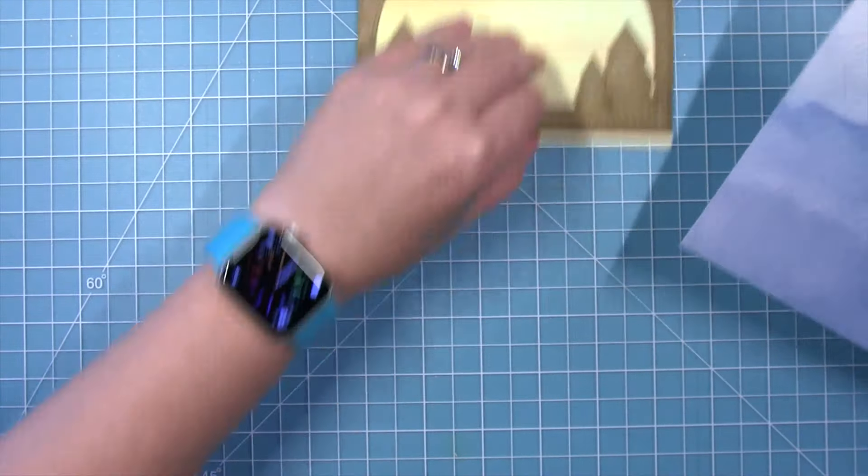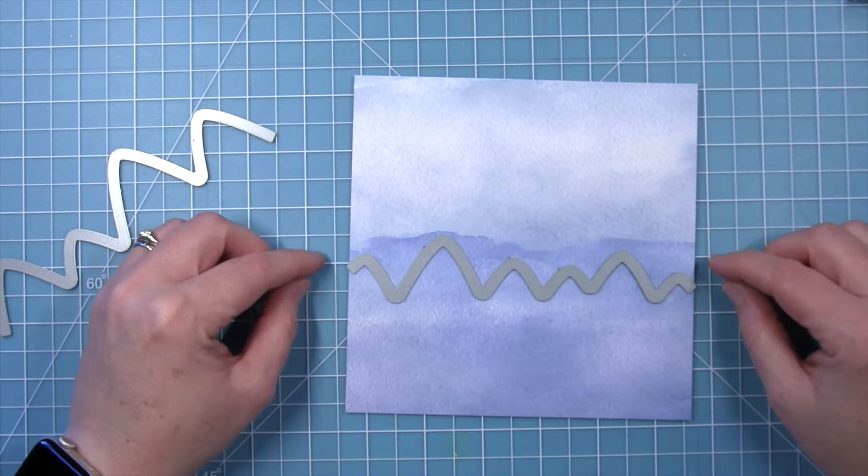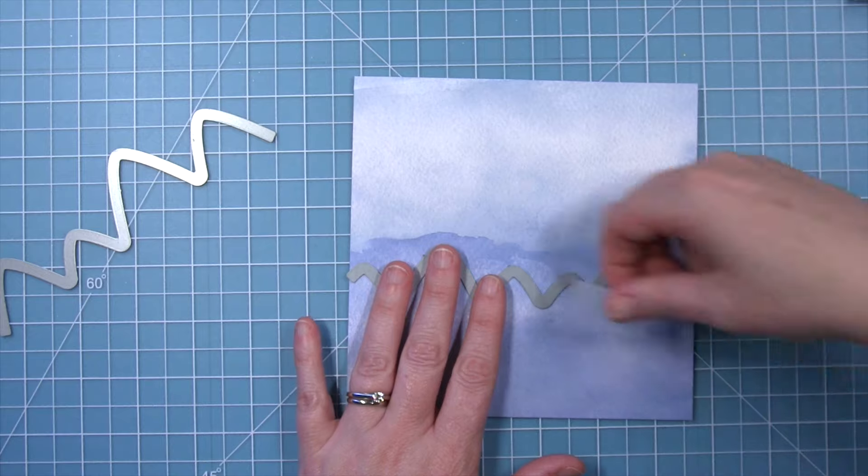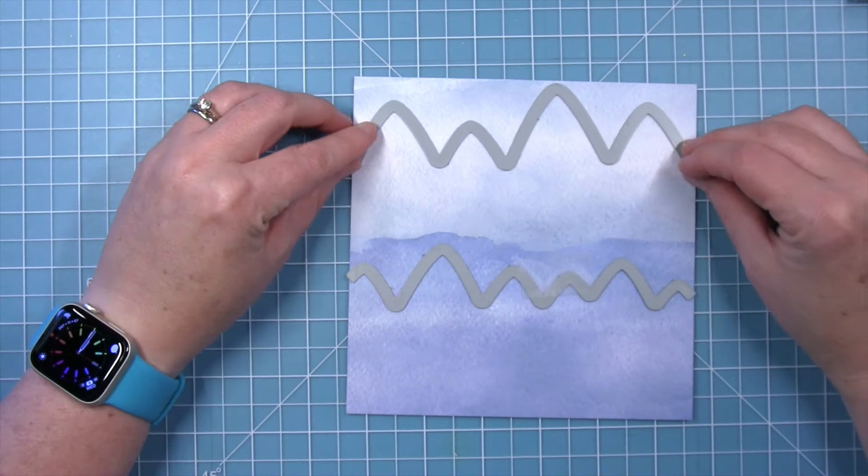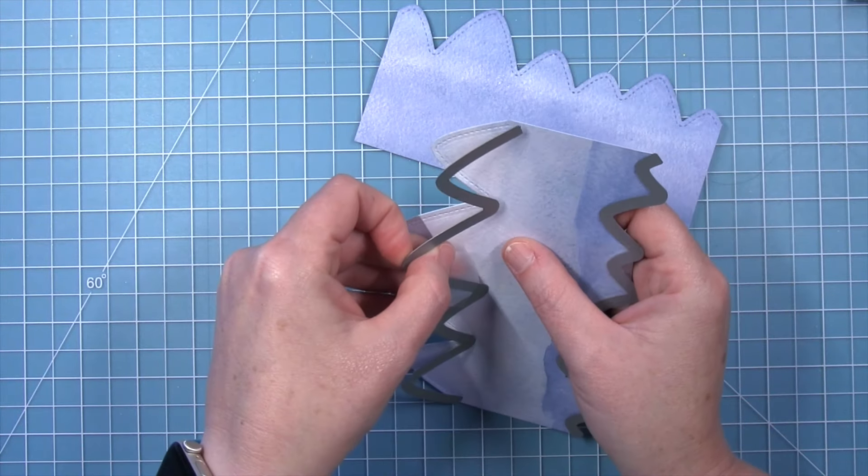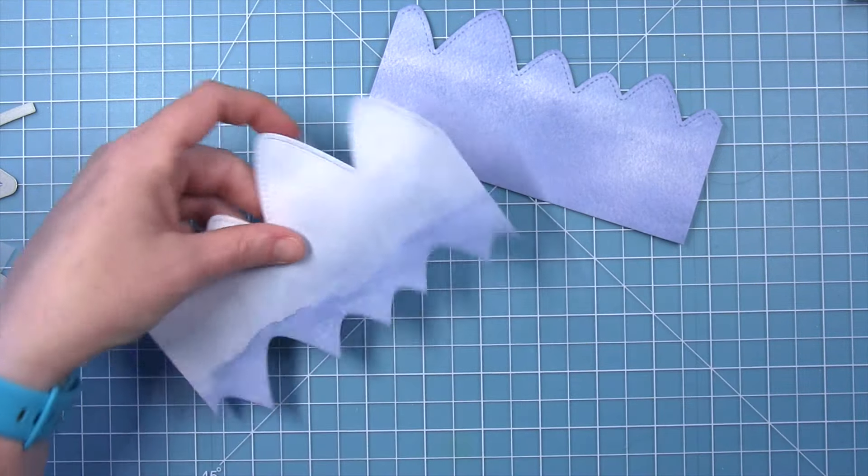Now I can take this and take my two mountain borders and I can cut both of them at the same time. So I'm going to make my darker mountains in the foreground with the smaller mountain border and my lighter mountains in the background with the bigger mountain border. And then I'll just run this through my die cut machine all at once and I get both mountain ranges to kind of layer one on top of each other.